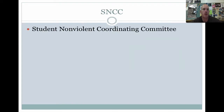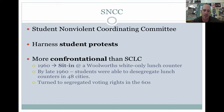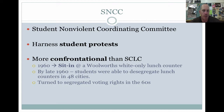Next up we have SNCC, the Student Nonviolent Coordinating Committee. They are going to harness student protests as their main form of resistance. They're a little bit more confrontational than the SCLC — they still advocate nonviolence, but they're going to be a little more in your face. In 1960, they also went along with the sit-in form of resistance at the Woolworth White-Only lunch counter. By late 1960, these students were able to desegregate lunch counters in 48 cities, which is not bad for one year of work. By the late 1960s, they would turn to segregated voting rights.